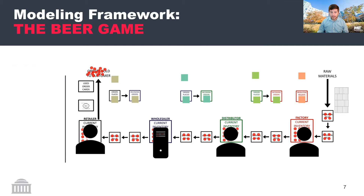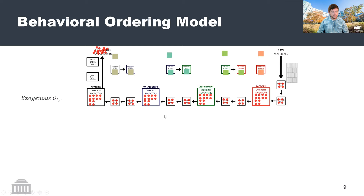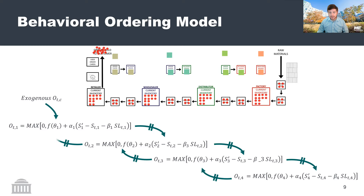Talking about the behavioral ordering model approach: this is based around Sterman's 1989 configuration that uses four key parameters within the space for entities to take in information and change their expectations for the future. Specifically, there's some sort of exogenous order signal that feeds into the retailer's expectation for the future, which then affects their own orders downstream to a wholesaler, then to a distributor, then to a factory. That factory in turn makes a production decision used to fill upstream shipment requests in sequence.